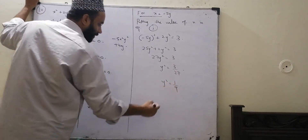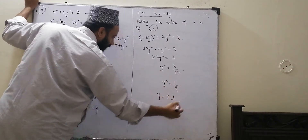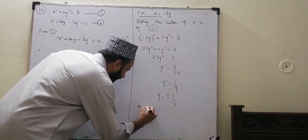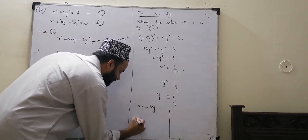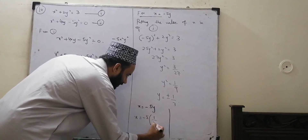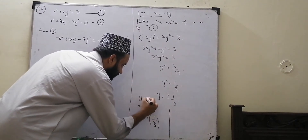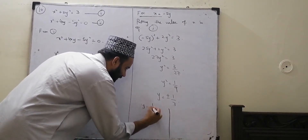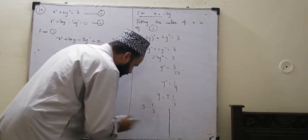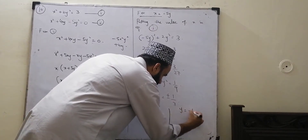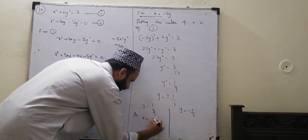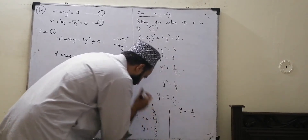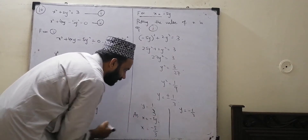So y squared is equal to 3 by 27, which simplifies to y squared equals 1 by 9. Taking the square root, y is equal to plus or minus 1 by 3. Since x is equal to minus 5y, when y equals 1 by 3, x equals minus 5 by 3, and when y equals minus 1 by 3, x equals 5 by 3.